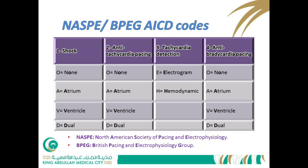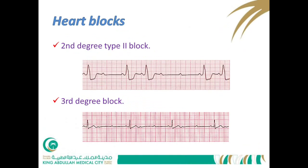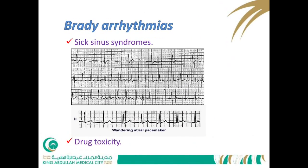Indications for CIEDs: pacemakers are indicated for certain types of heart block, symptomatic bradycardia, and bradyarrhythmias. ICDs are indicated for certain tachycardias, long QT syndromes, and bradyarrhythmias. Specific heart block indications include 2nd degree type 2 and 3rd degree block. Bradyarrhythmias include sick sinus syndrome, which is the most common cause of pacemaker insertion and has many subtypes.